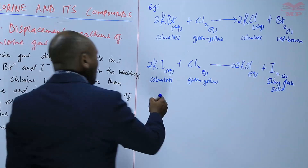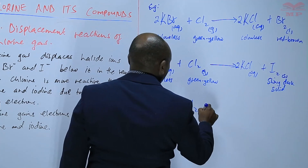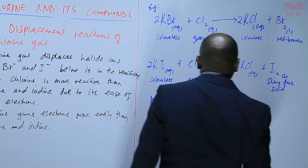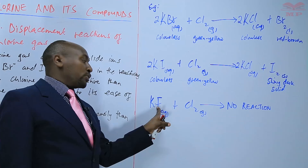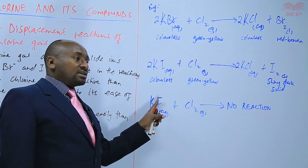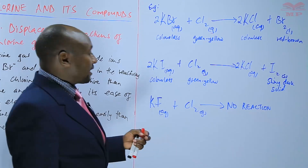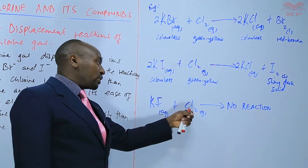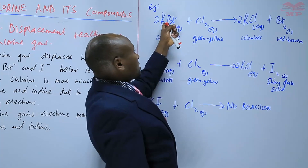But if we had potassium fluoride plus chlorine, here we will have no reaction. The reason is that chlorine is of a lower reactivity than fluorine, so it cannot displace fluorine from fluoride ions. Fluorine is more reactive than chlorine. For an element to displace another, it must be more reactive than the one it is displacing. So chlorine cannot displace fluorine, but chlorine can displace iodine and bromine.